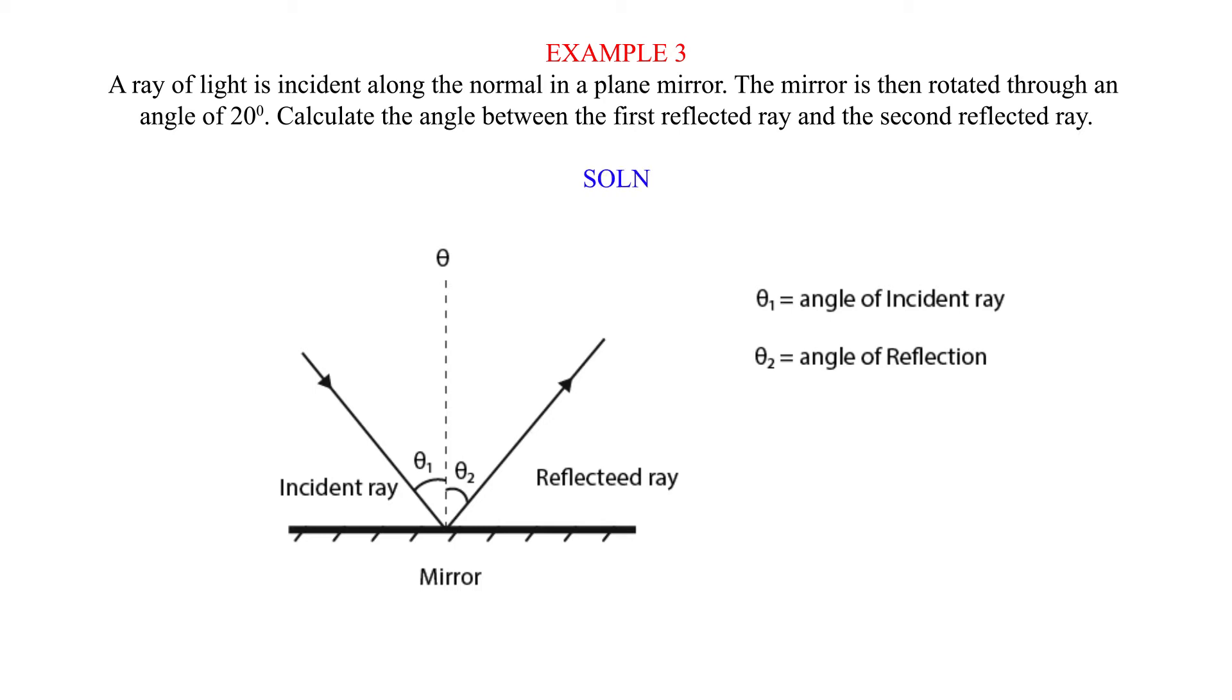Solution. Angle of rotation of reflected rays equals 2 times angle of rotation of the mirror. Equals 2 times 20 degrees. Equals 40 degrees.